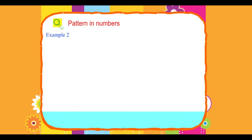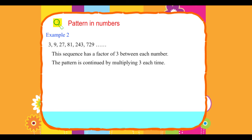Example 2. 3, 9, 27, 81, 243... This sequence has a factor of 3 between each number. The pattern is continued by multiplying 3 each time.